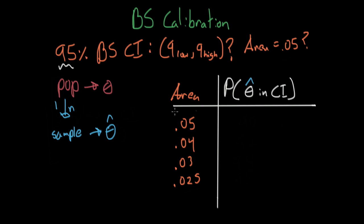And instead of taking lots and lots of samples from the population itself, we take lots and lots of samples from the sample. So we make BS samples. And from each of these BS samples, we make a confidence interval. And with all of these confidence intervals, we can estimate what the true probability that theta hat will be inside a confidence interval constructed with an area of 0.05.